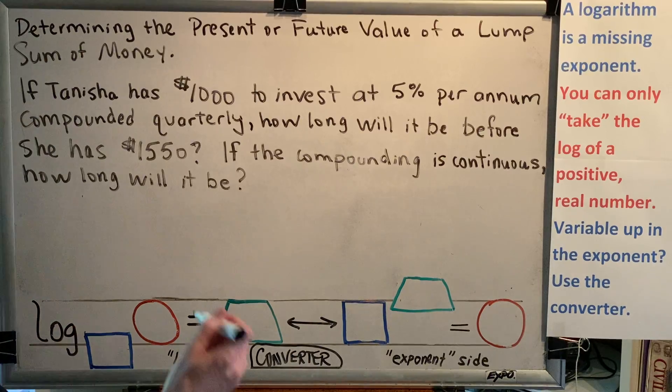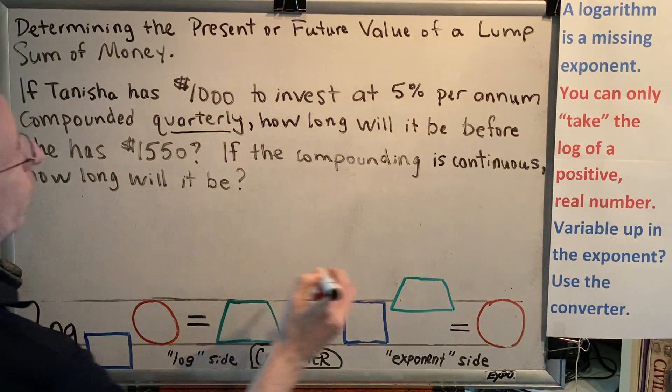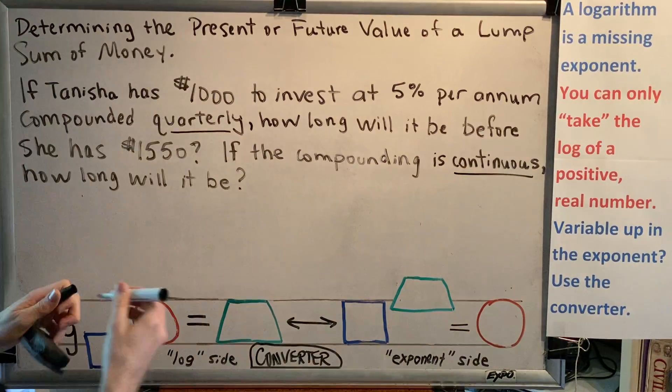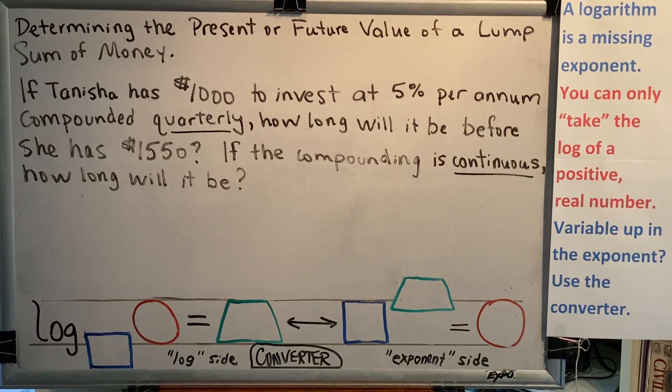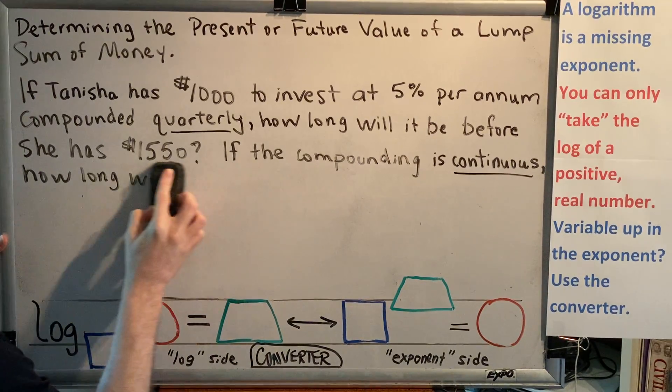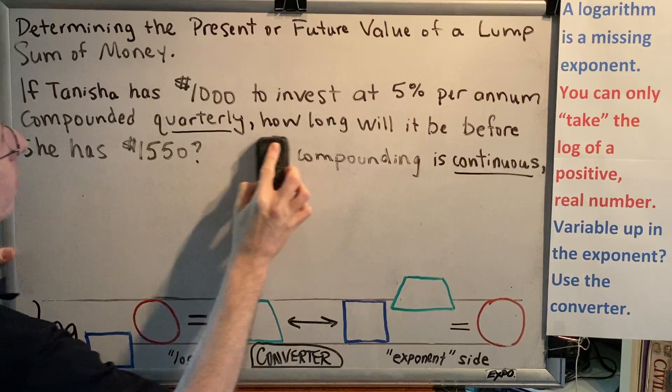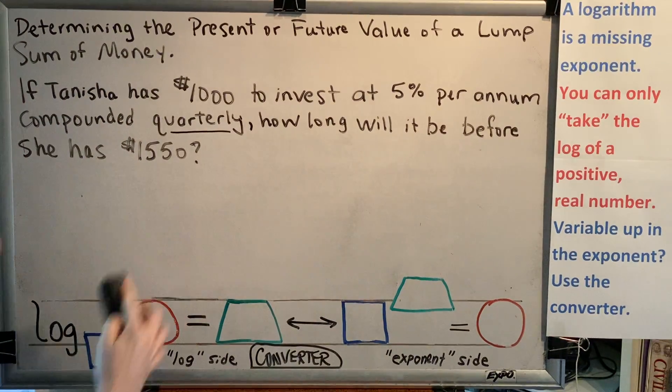Notice that the difference between the two sentences is compounded quarterly versus compounded continuously, and there's a different formula for each one. So let's get rid of this last sentence just for a moment and solve this first stated problem.